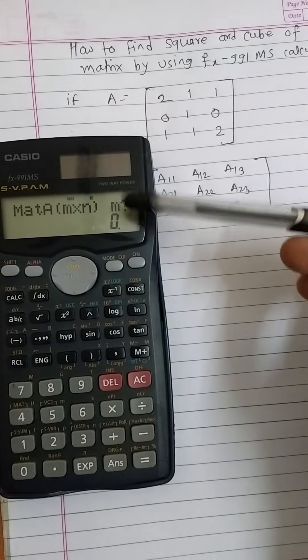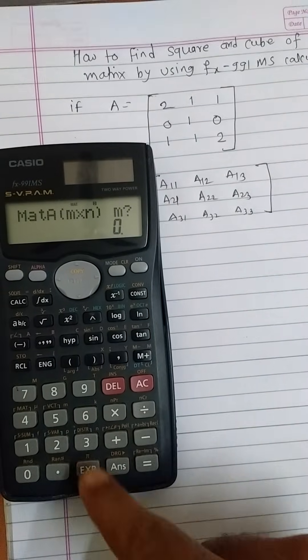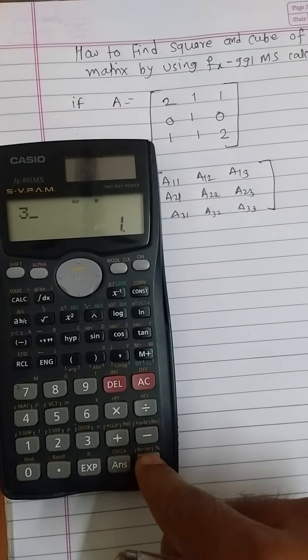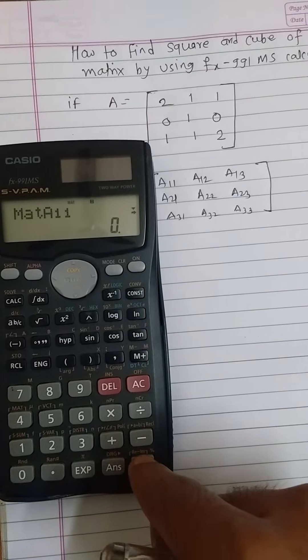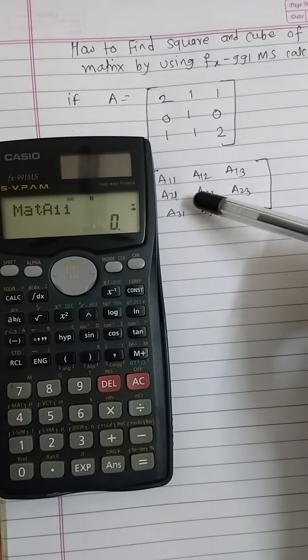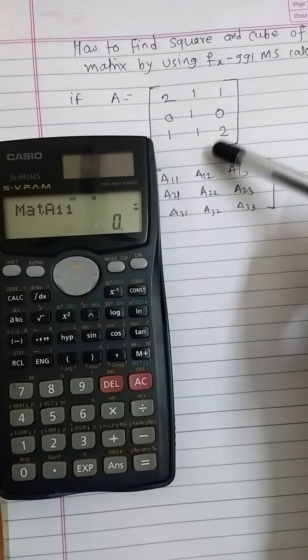Therefore I will press m is equal to three, then press equal button. Similarly press three for n. Then we have a three by three matrix A. Then press all entries: a11 is two, a12 is one, a13 is one, a21 is zero.